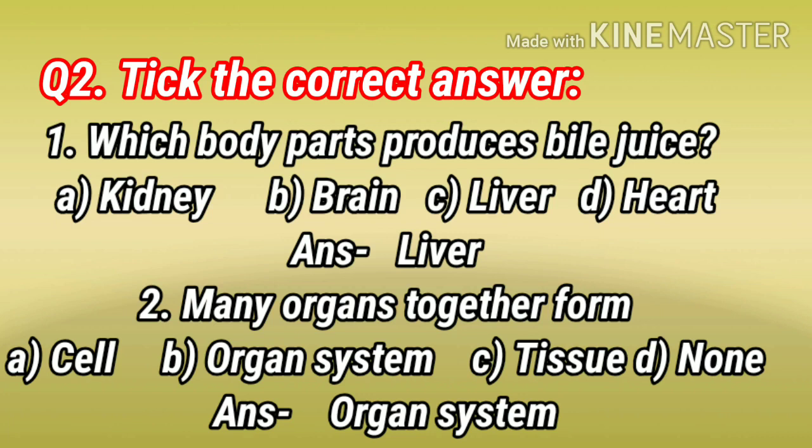Number 2: Many organs together form — A. Cell. B. Organ system. C. Tissue. D. None. Answer: Organ system.